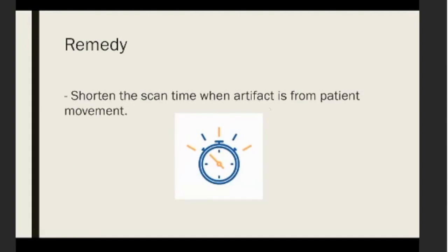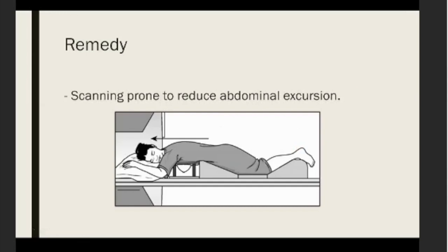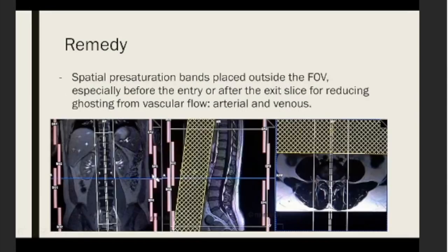Another remedy is to shorten the scan time when the artifact is caused by patient movement — this helps reduce the time the patient is in the machine. Scanning in the prone position instead of supine can help reduce abdominal excursion, though this is not recommended as it is uncomfortable for the patient. For spine or cervical imaging, saturation bands placed outside the field of view can reduce ghosting from vascular flow.